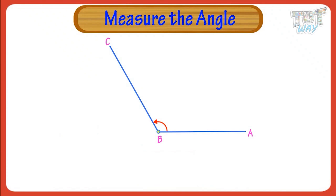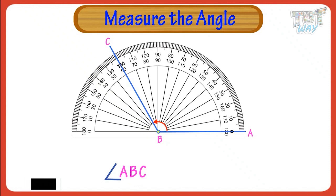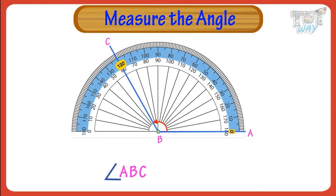Following the inner scale around the protractor, we find that the other arm OC passes through the inner scale at 60 degrees. So the size of angle AOC is 60 degrees. Now we have another angle to measure. To measure the size of angle ABC, place the protractor over the angle so that the center is directly over the angle's vertex, that is B, and the baseline is along the arm AB of the angle. We will use the outer scale to measure angle ABC, as the arm AB passes through the zero of the outer scale.